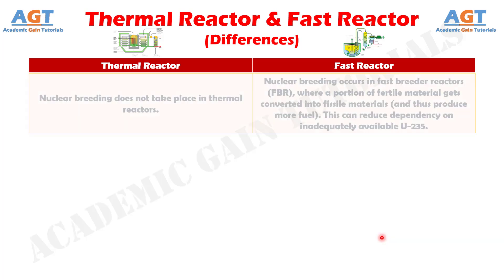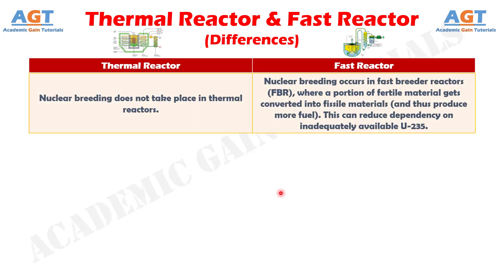Number 5. Nuclear breeding does not take place in thermal reactors. Whereas, nuclear breeding occurs in fast breeder reactors, where a portion of fertile material gets converted into fissile materials, and thus produces more fuel. This can reduce dependency on inadequately available uranium-235.